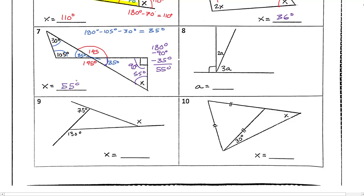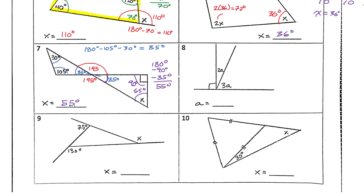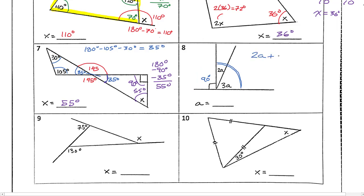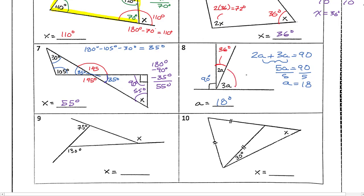Number 8 involves complementary angles with algebra. These two angles are in a 90-degree quadrant, so 2a plus 3a equals 90. That simplifies to 5a equals 90, divide by 5, and a equals 18 degrees. The first angle is 2 times 18 equals 36 degrees, and the second angle is 3 times 18 equals 54 degrees — and 36 plus 54 equals 90. ✓